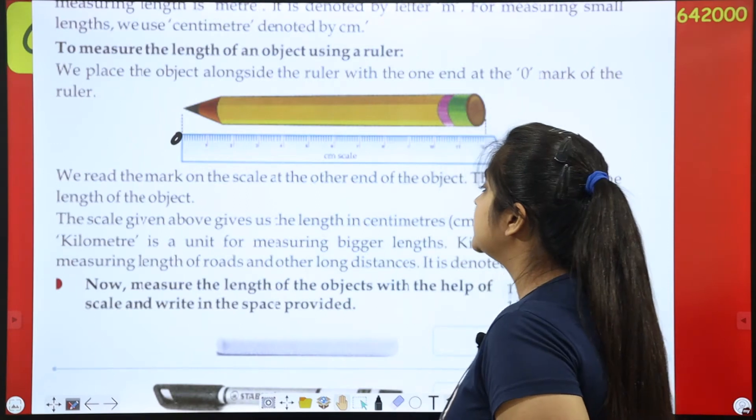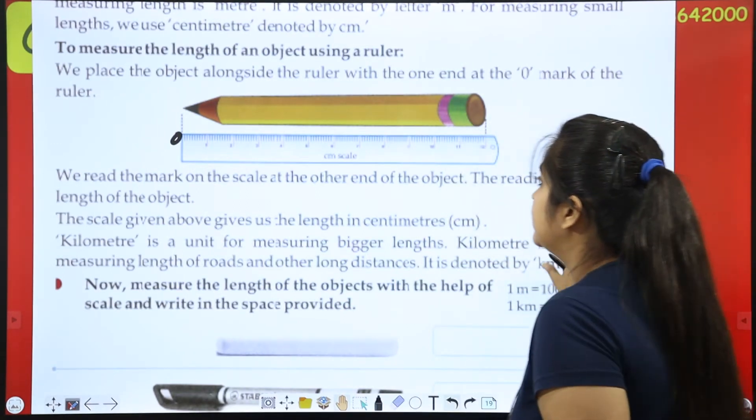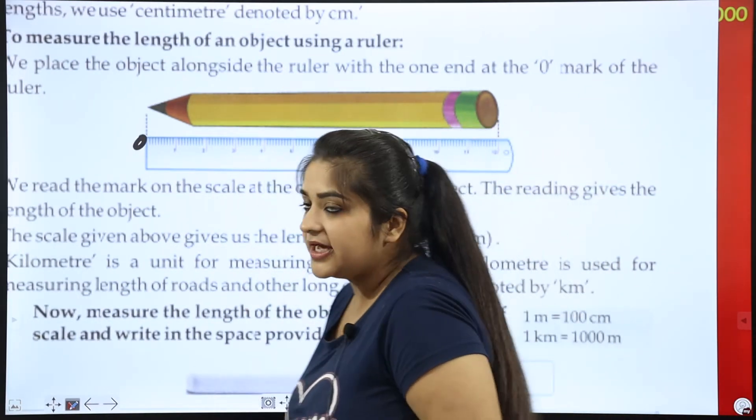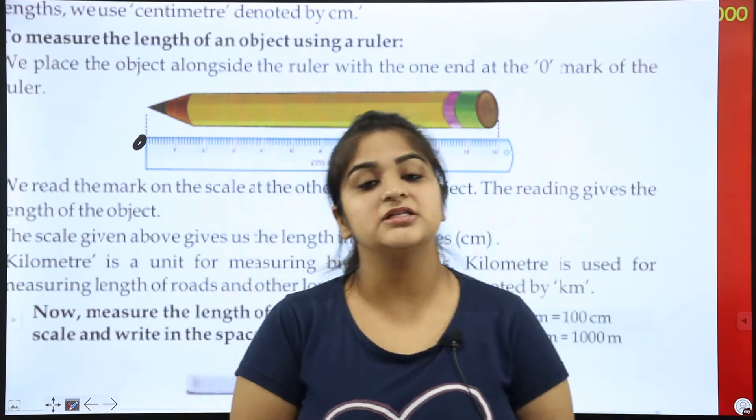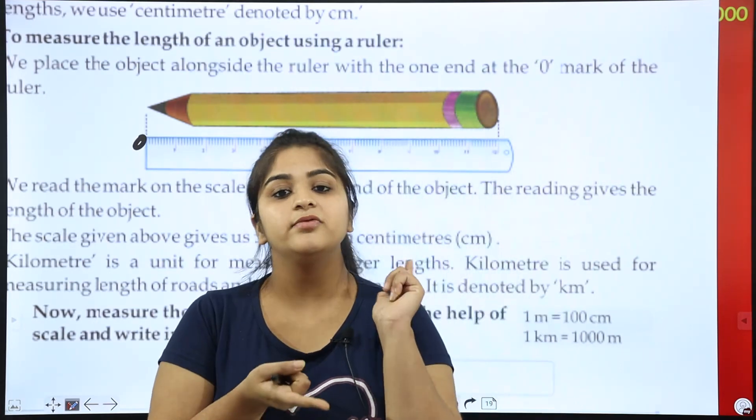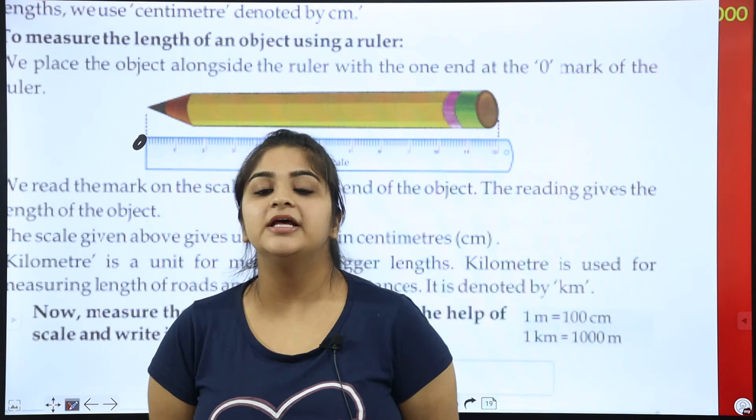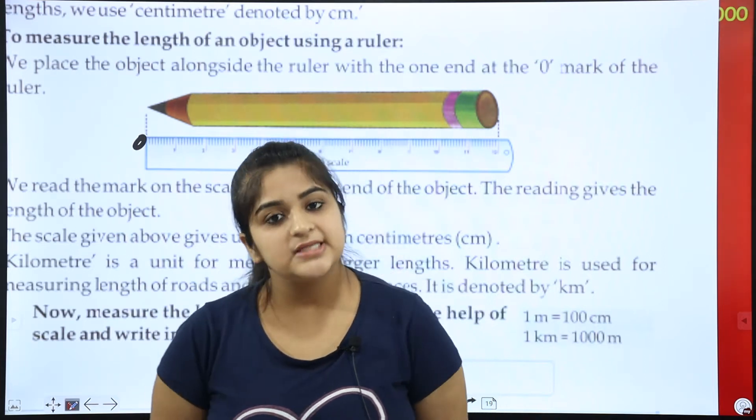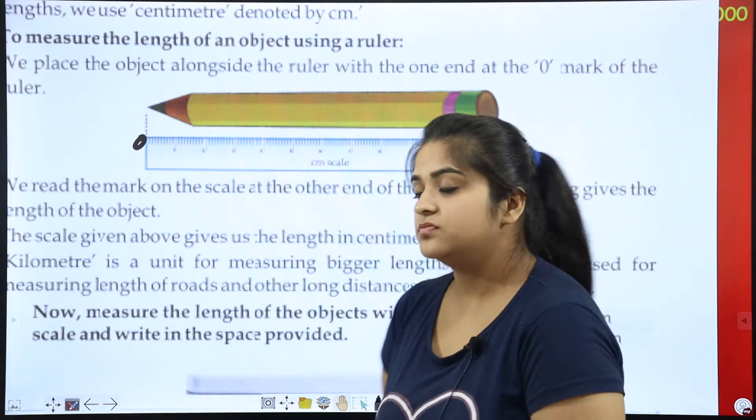The scale given above gives us the length in cm. Now, the length of the above, it is in cm. Why? Because the pencil is a small thing, and the length of small things always goes into cm.